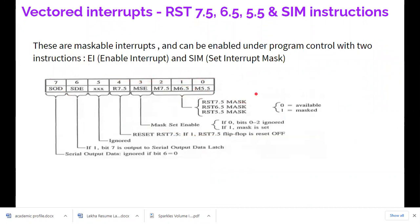Now let's see how to set these vector interrupt masks. We have two exclusive instructions: SIM — Set Interrupt Mask — and RIM — Read Interrupt Mask. Using SIM, you can set an interrupt mask; using RIM, you can read the current interrupt mask state. These maskable interrupts can be enabled under program control.